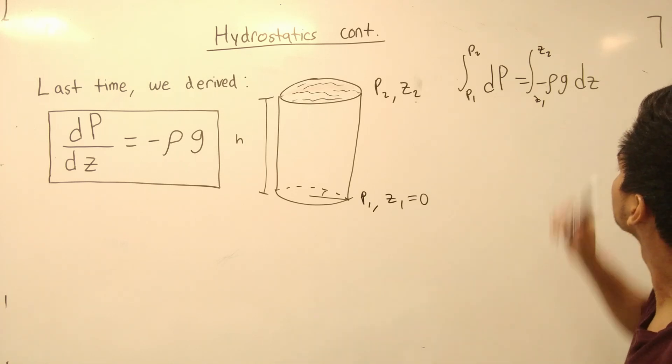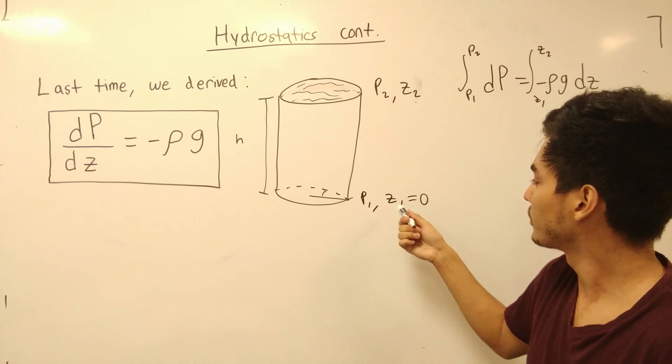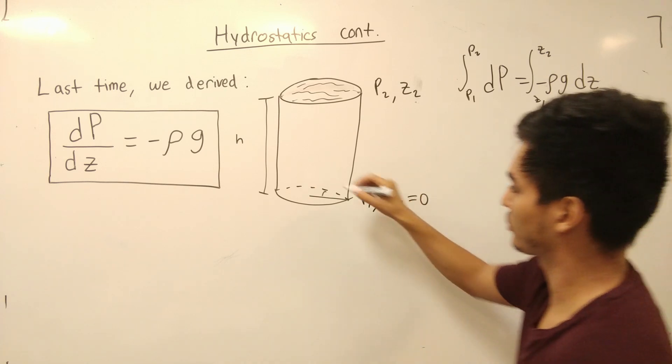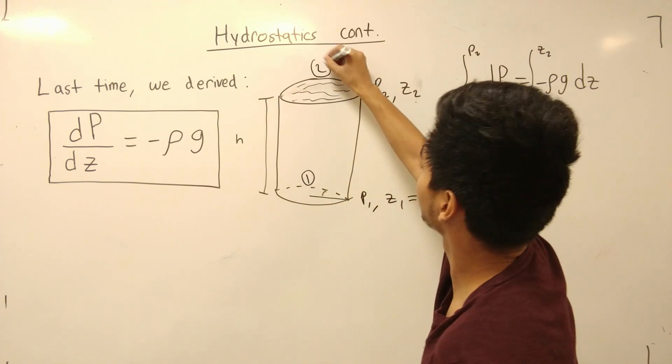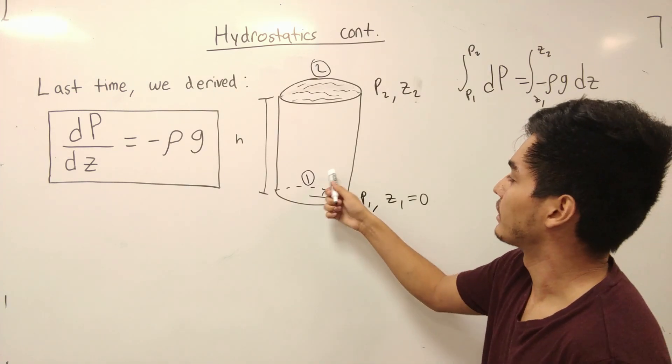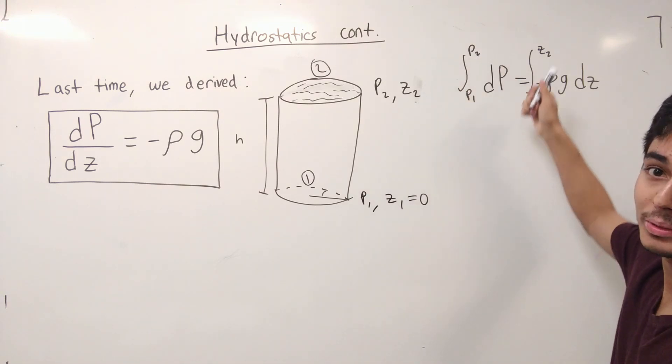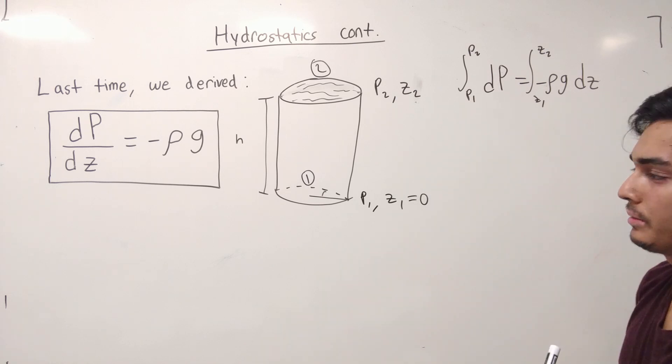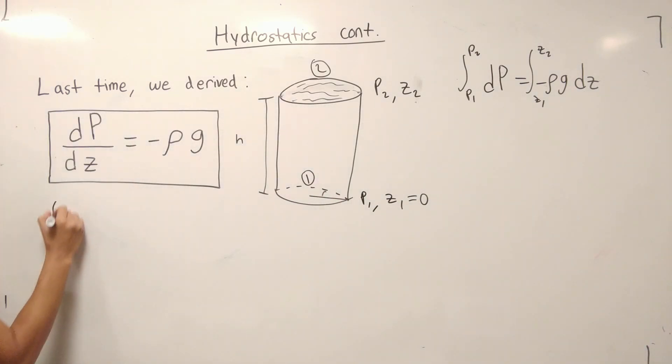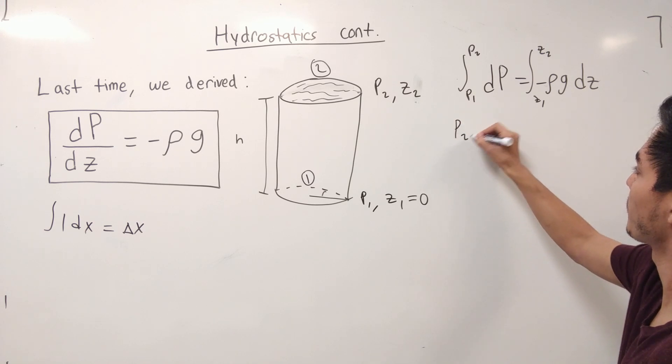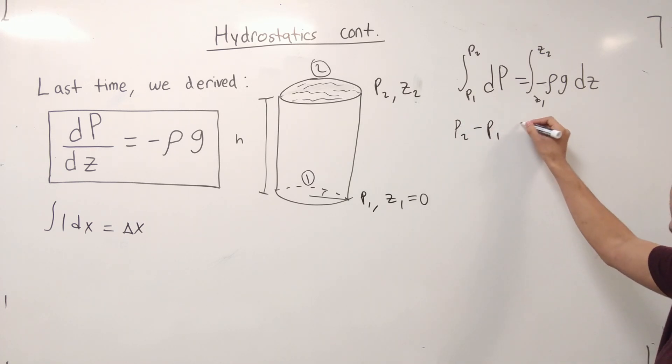I'm going to have to integrate from P1 to P2 and this from Z1 to Z2. Because P1 is corresponding to Z1 and P2 is corresponding to Z2. Again, it doesn't matter which one you choose as 1 and 2. This is point 1 and this is point 2. But what does matter is the fact that these points have to be consistent with each other. So that's why P1 corresponds to Z1 and P2 corresponds to Z2. Now when you integrate dP, remember a little side note here, you have integral of dX, and it's going to be delta X using the boundaries.